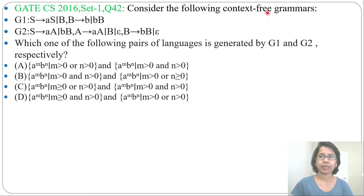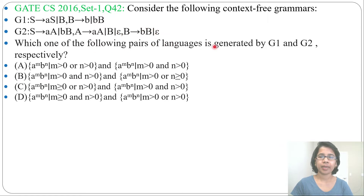Consider the following Context-Free Grammar. G1: S tends to AS or B; B tends to B or BB. This is Grammar 1. Next, Grammar 2: S tends to AA or BB; A tends to AA or B or Epsilon; B tends to BB or Epsilon. Which one of the following pairs of languages is generated by G1 and G2 respectively?